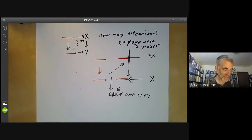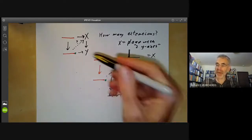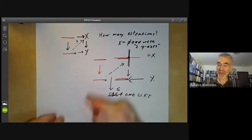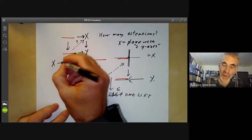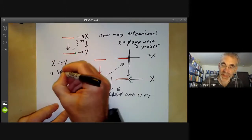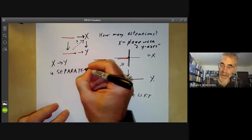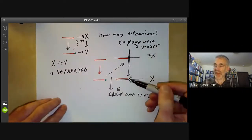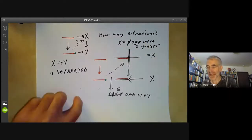We want to have an analogue of this in algebraic geometry. This property — at most one lift — will turn out to correspond to the property that the morphism X to Y is separated. And as we see, X and Y can be non-separated, but this morphism might still be separated.